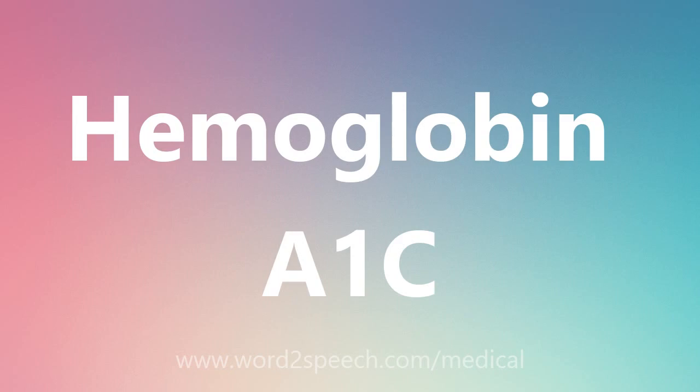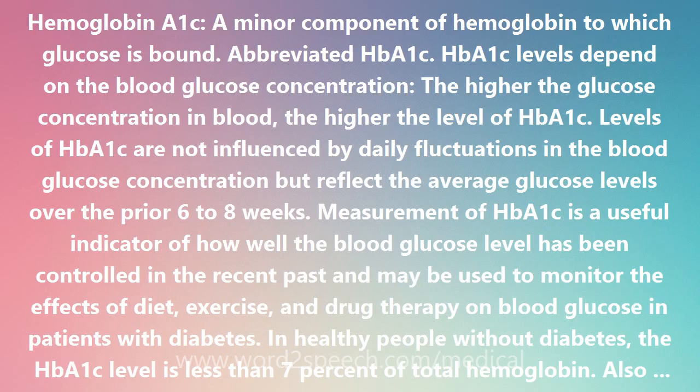Hemoglobin A1c is a minor component of hemoglobin to which glucose is bound, abbreviated HbA1c. HbA1c levels depend on the blood glucose concentration — the higher the glucose concentration in blood, the higher the level of HbA1c. Levels of HbA1c are not influenced by daily fluctuations in the blood glucose concentration.